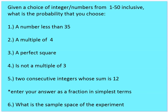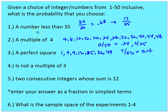Let's go through some questions. Given a choice of an integer from 1 through 50 inclusive, what is the probability that you choose certain values? Number less than 35: that's 34 out of 50, or 17 out of 25, probability 0.68. A multiple of 4: there are 12 out of 50 such integers, so 0.24. A perfect square — 1, 4, 9, 16, 25, 36, 49 — that's 7 out of 50, so 0.14.